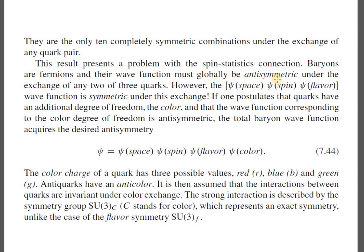However, the space, spin, and flavor wave function is symmetric under this exchange, so we have a problem. The only way out is to postulate that quarks have an additional degree of freedom — color — and that the wave function corresponding to the color degree of freedom is anti-symmetric. Then we can have the total baryon wave function become anti-symmetric.